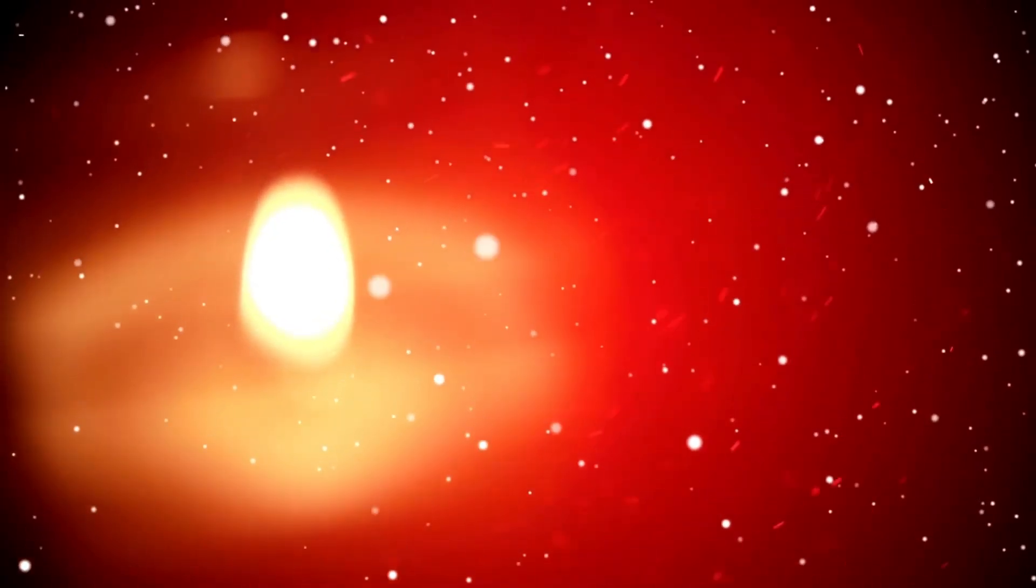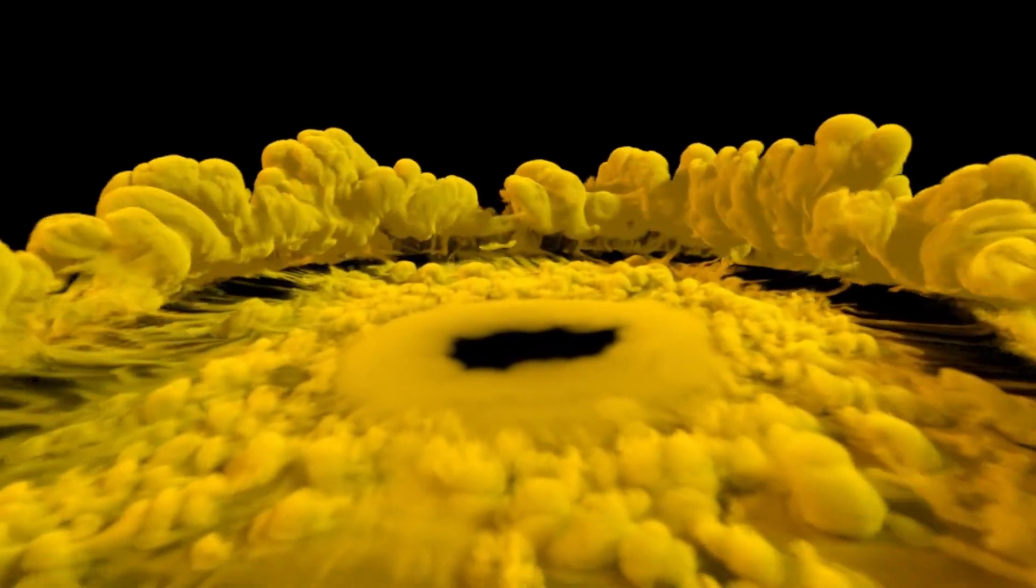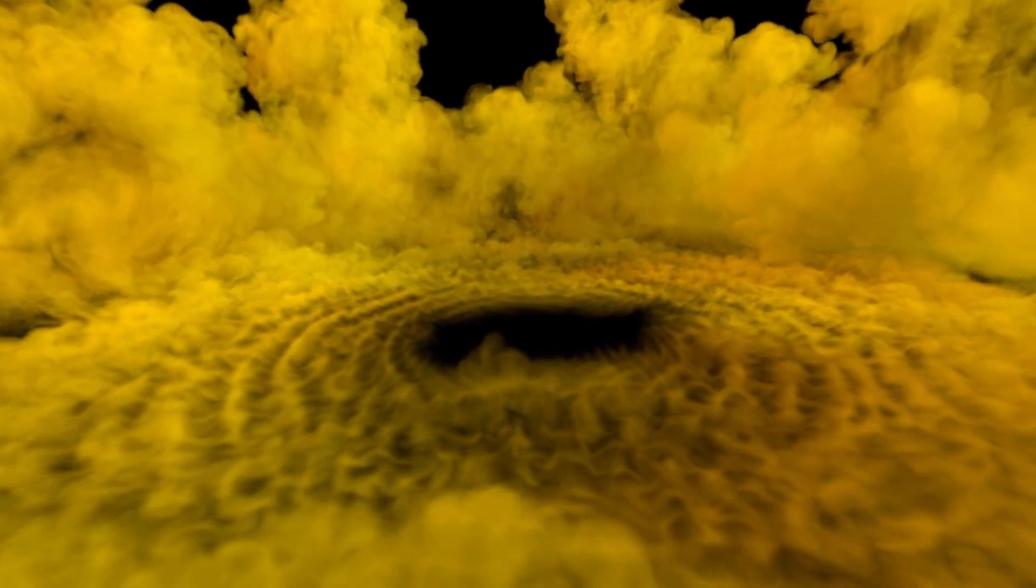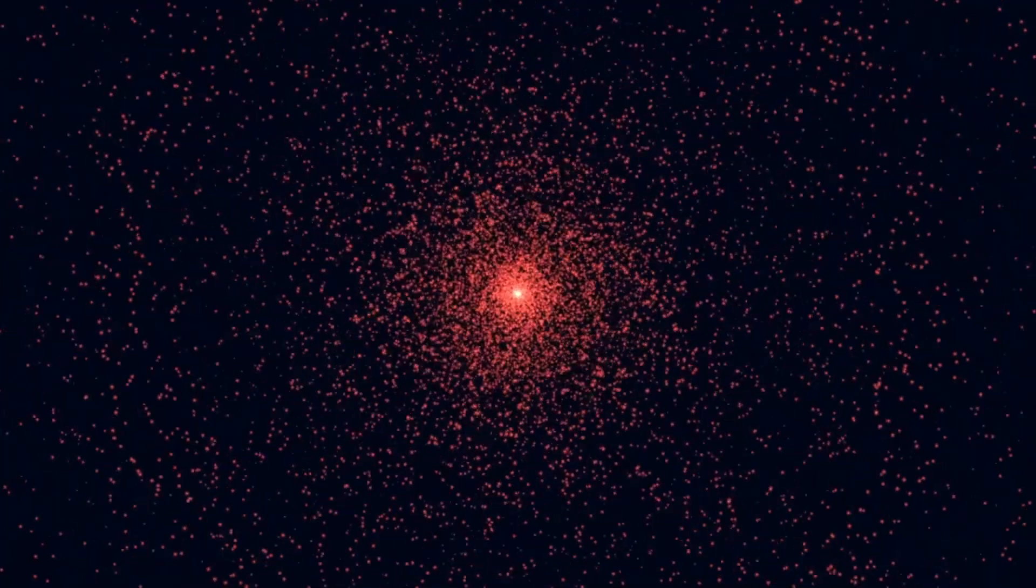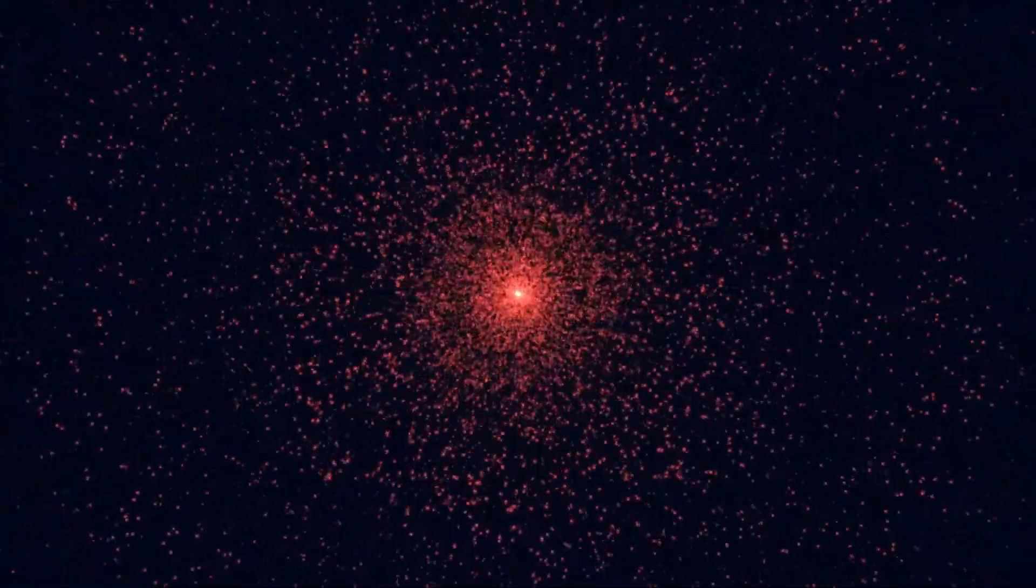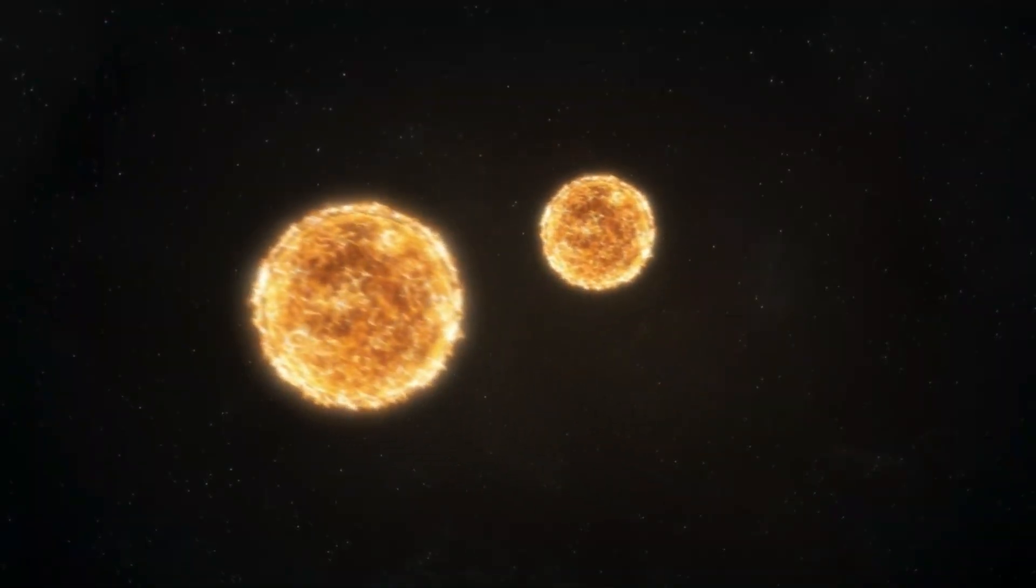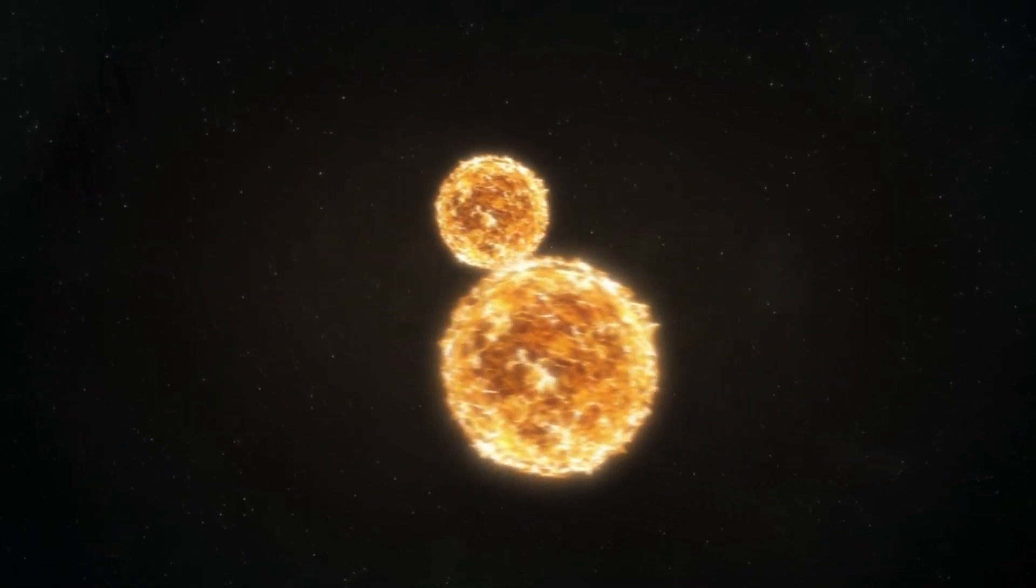Fortunately, Betelgeuse is distant enough from Earth to prevent any catastrophic consequences. But if such a supernova occurred closer to our planet, it could produce gamma-ray bursts capable of stripping away Earth's ozone layer, increasing harmful ultraviolet radiation, disrupting ecosystems, harming human health, and damaging global agriculture. The electromagnetic pulse from such an explosion could also interfere with satellites and electronic systems on Earth.